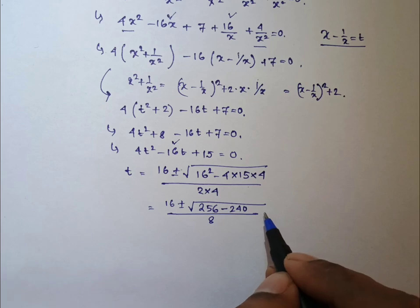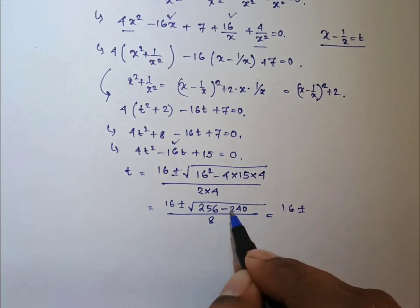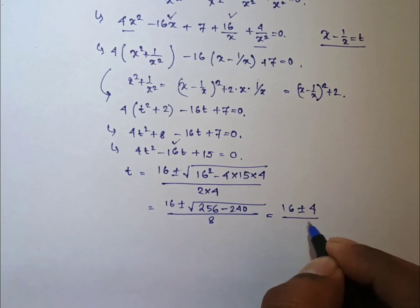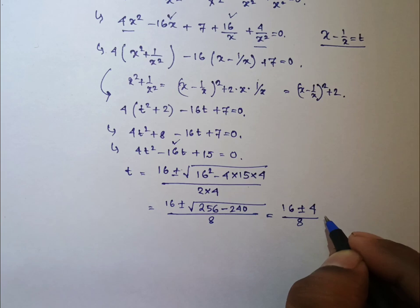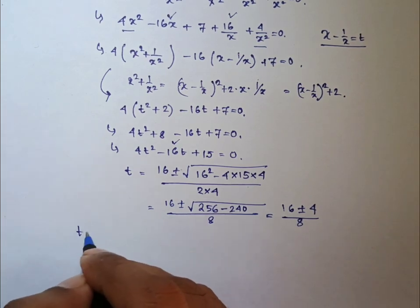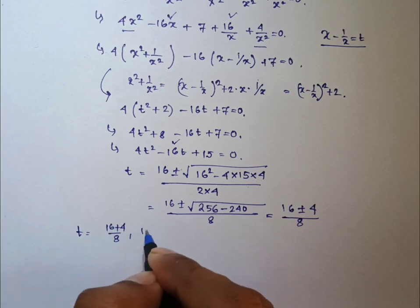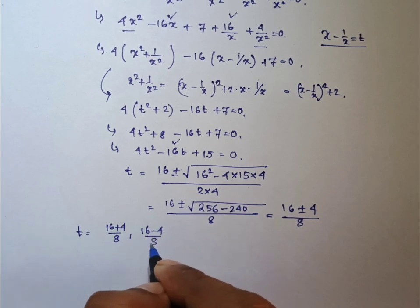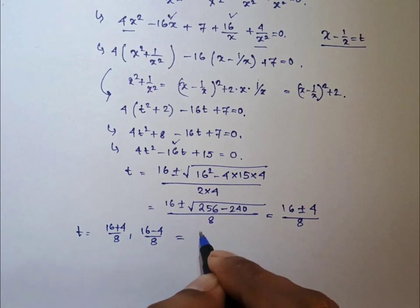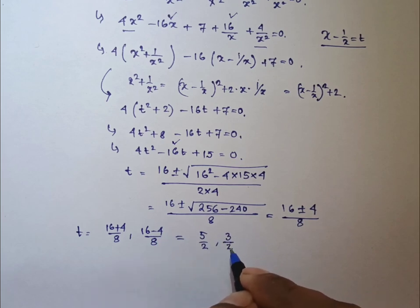So its value will be 16 plus minus square root of 16, that is 4, whole divided by 8. That is, t will be having two values: one is 16 plus 4 by 8, another is 16 minus 4 by 8. That is, t will be equal to 20 by 8, that is 5 by 2. Another will be 12 by 8, that is 3 by 2.